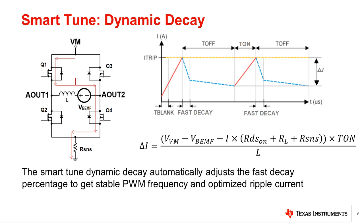Mixed decay could not optimize the winding ripple current for all of the above variant combinations. Smart tuning dynamic decay is introduced to automatically adjust the fast decay percentage to get stable PWM frequency and optimize the ripple current. That can save development time and engineering effort.